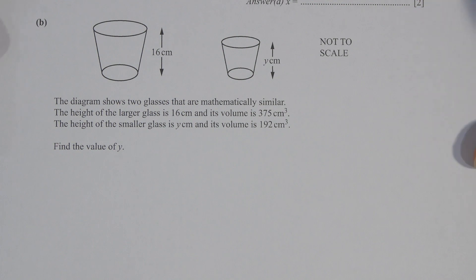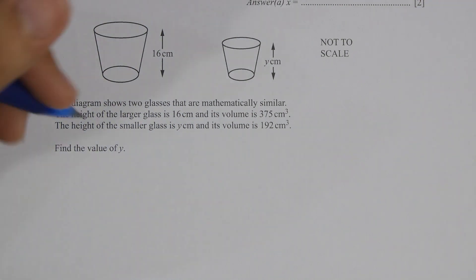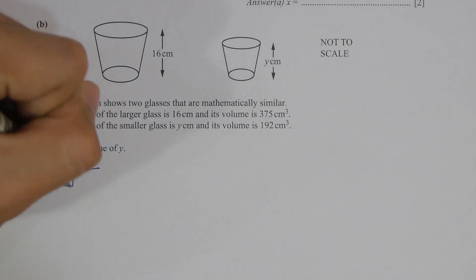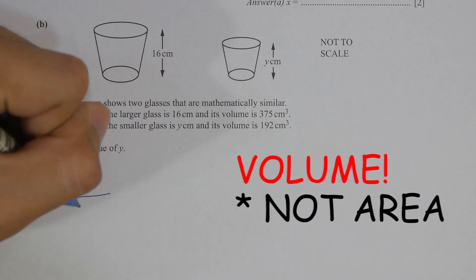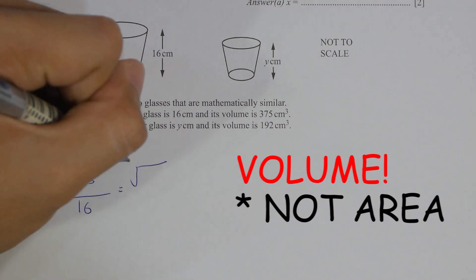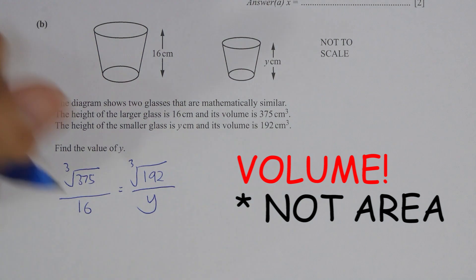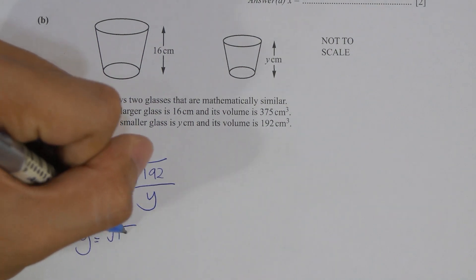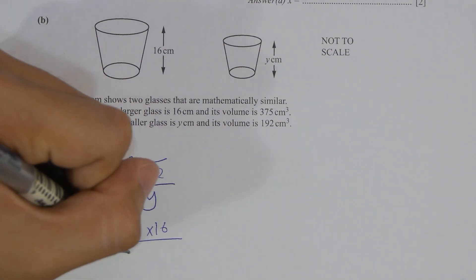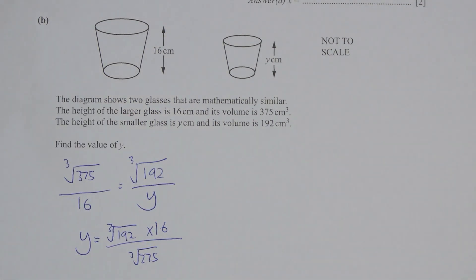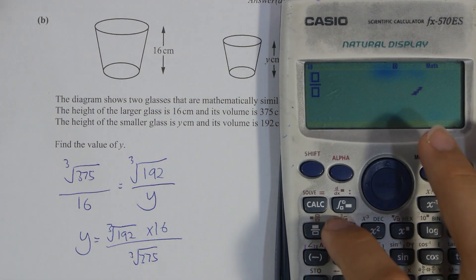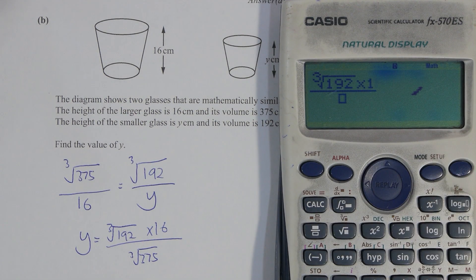For part B, similar method that was being used earlier. However, for the area, you are required to cube root it. So cube root of 375 over 16 equals cube root of 192 over y. And y's value will actually be 12.8 after the calculation.